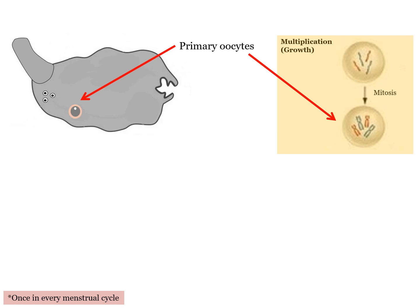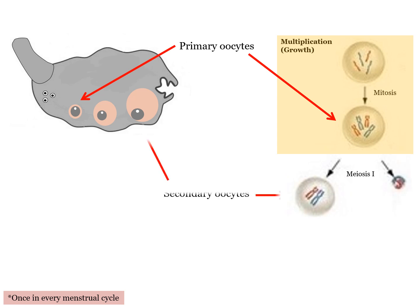Let's recap the maturation phase with this diagram. Primary oocytes are produced from the previous multiplication phase, so every female baby is born with these primary oocytes. As a female reaches puberty, follicles which contain the primary oocytes start to grow. This is when meiosis I takes place. After meiosis I, the secondary oocyte is produced and released out from the ovary in a process known as ovulation. It also produces a polar body which will later degenerate. Always remember that this phase only happens after a female reaches puberty, and it only takes place once in every menstrual cycle.